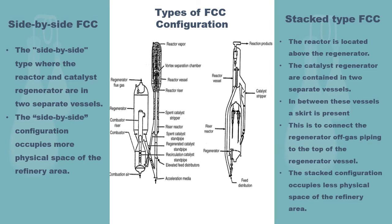An ESP helps remove small catalyst particles through static electricity. There are two types of FCC configuration. The first configuration is the side-by-side FCC, where the reactor and the catalyst regenerator are placed in two separate vessels, causing it to occupy slightly more space in the refinery area. In the stacked type FCC, the reactor is located above the regenerator. The catalyst regenerator is contained in two vessels separately, and a skirt is present between these vessels, which connects the regenerator off-gas piping to the top of the regenerator vessels. This configuration takes up less space compared to the side-by-side FCC.